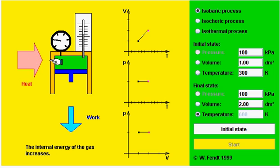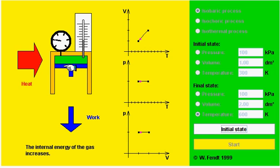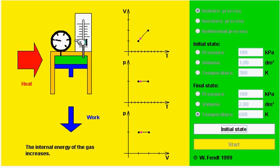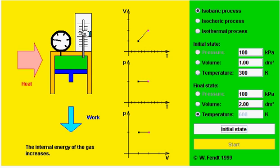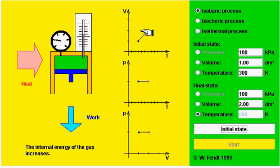That is why you need to provide heat during an isobaric process. This is the pressure gauge showing the change in pressure, and this is the thermometer showing the increase in temperature. The initial state has a thermometer reading of 300 kelvin, volume of 1 liter, and pressure of 100 kilopascals. After clicking start, you can see the volume increasing, heat being input, and work being done. The temperature increases from 300 to 400 to 500 to 600 kelvin, and the point in the V-T graph moves along the straight line.